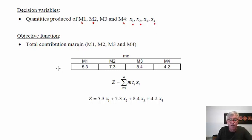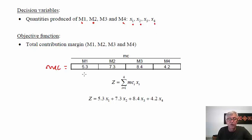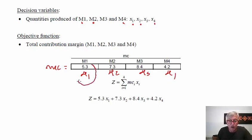From the initial data table we have the unit contribution margin of each product. The objective function is simply the sum of the total contribution margin of each product — the unit contribution margin multiplied by the quantity produced. So the objective function combines 5.3·X1, and so on for each product's contribution margin times its quantity variable.